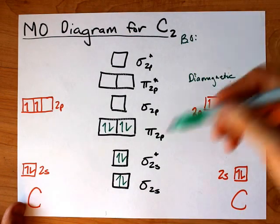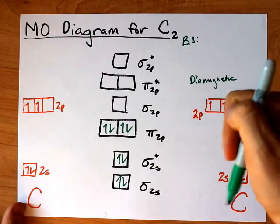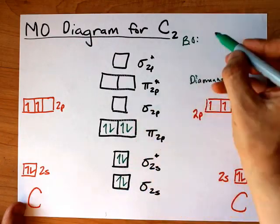And lastly, I want to calculate the bonding order. Number of electrons in bonding orbitals. One, two, three, four, five, six.